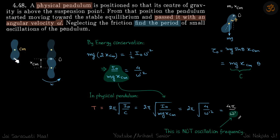We have a pendulum whose center of mass is above the point of suspension. This is the point of suspension with the center of mass above it. It is released from the top, so it will go down and cross the mean position with angular velocity omega dash. We need to find the period of small oscillations.